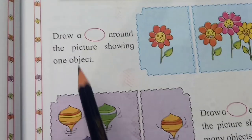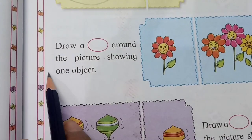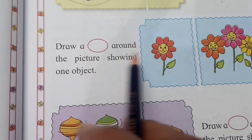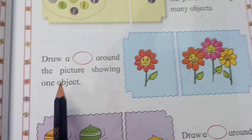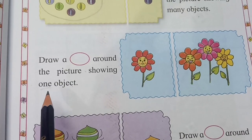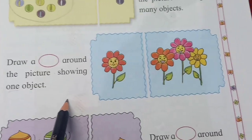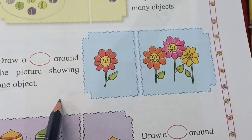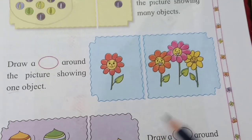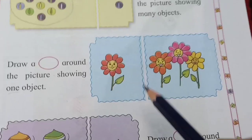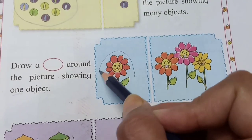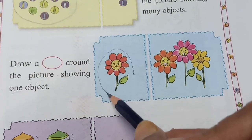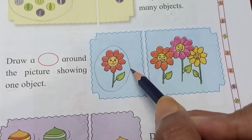और उसके बाद, draw a circle around the picture showing one object — तो एक ही फूल है वहाँ, उसे circle करना है। तो कहाँ है एक फूल? अरे, तुम लोग कितने होशियार हो! शाबाश! तो अभी हम लोग इसे circle करेंगे। ओके?